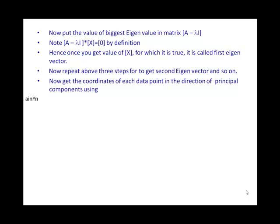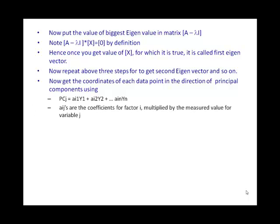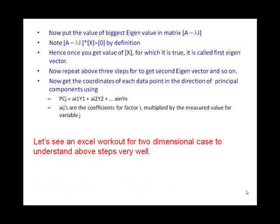The fourth step is to get the coordinates of each data point in the direction of the principal components using the equation: for any data point i, the score is a_i1·y1 + a_i2·y2 + ..., where a_ij is the factor coefficient of factor i and y_j is the measured value of variable j.